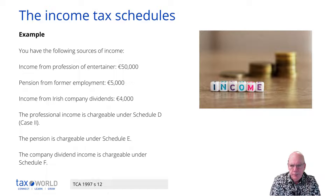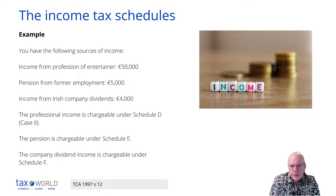Here you have the following sources of income: income from being an entertainer at fifty thousand a year, a pension from a former employment, and income from company dividends. The professional income from being an entertainer is chargeable under Schedule D — there's a subdivision called Case 2, which we'll look at later. The pension is chargeable under Schedule E, and the dividend income is chargeable under Schedule F.